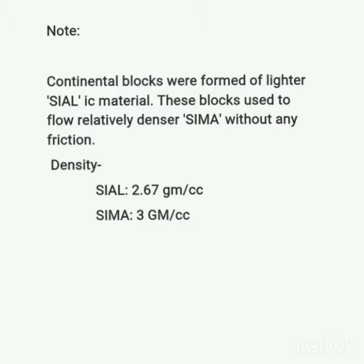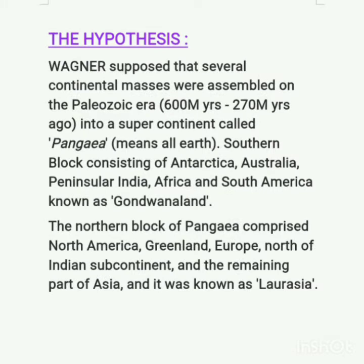Wegener supposed that several continental masses were assembled in the Palaeozoic era — that is, between 600 million years to 270 million years ago — into a supercontinent called Pangaea, which means 'all Earth.' The southern block, consisting of Antarctica, Australia, Peninsular India, Africa, and South America, was known as Gondwana land. While the northern block of Pangaea comprised North America, Greenland, Europe, the north of the Indian subcontinent, and the remaining part of Asia, and it was known as Laurasia.